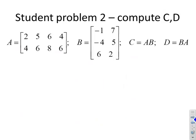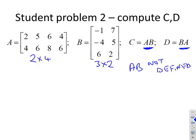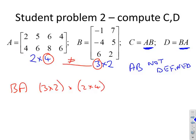Here's a problem: compute C = A×B and D = B×A. A is 2×4 and B is 3×2. Notice that A×B is not defined, because A has four columns but B has only three rows — those two numbers do not match. However, B×A is a 3×2 matrix multiplying a 2×4 matrix — the columns of B and the rows of A do match, so B×A is defined and can be computed.